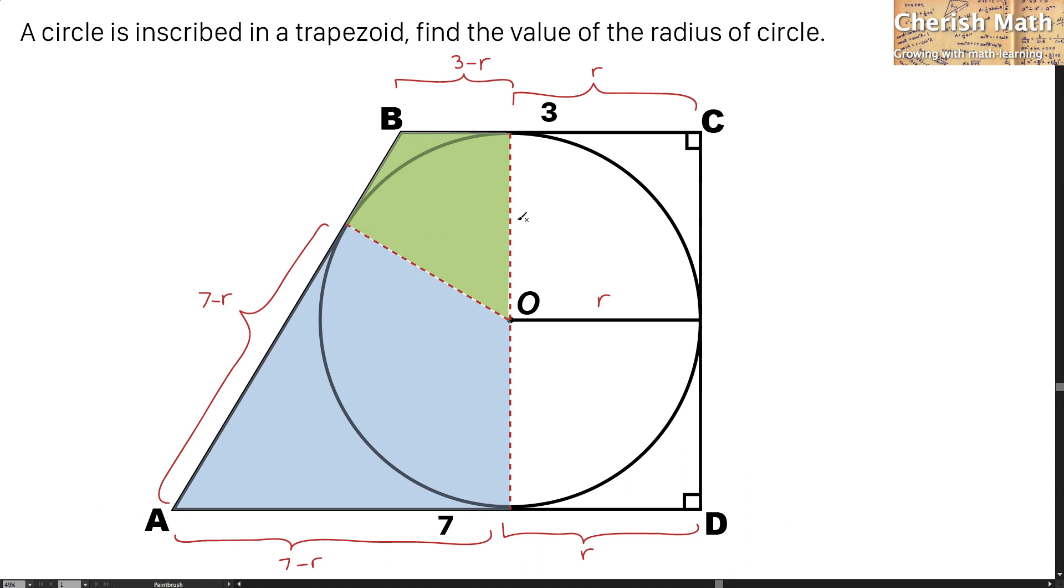Let me label R here again as the radius of the circle. Here are the final steps to solve the problem by using scale factor. I know that 7 minus R and the radius R are similar to each other, so by using the scale factor...